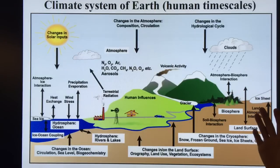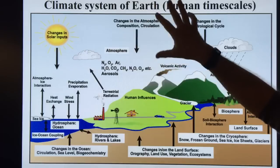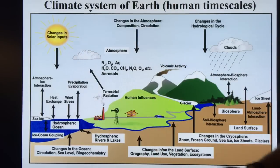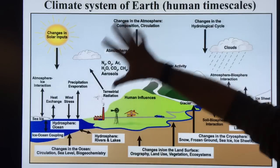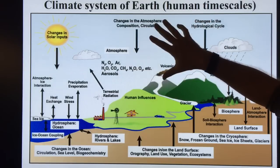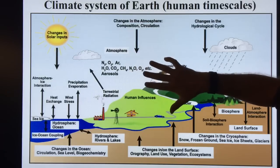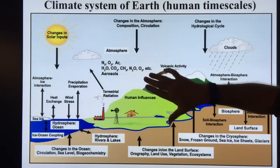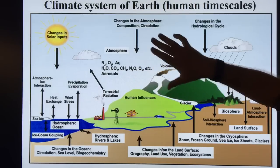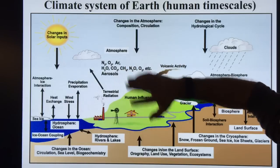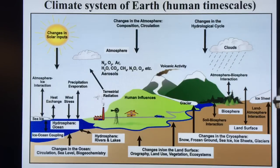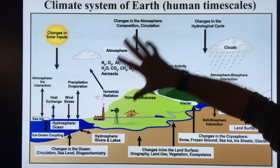So this is the climate system of the Earth. Let's talk about human timescales. We have basically the sky, the water, the land, the ice and snow, and the plants and animals — all of these different components. In the atmosphere, we have the core components: nitrogen, oxygen, argon. Then we have the greenhouse gases: water vapor, CO2, methane, nitrous oxide, and ozone. Then we have the aerosols, which can block sunlight and cause a phenomenon called global dimming and offset some of the warming of the planet from the greenhouse gases. There are lots of exchanges between the different systems.